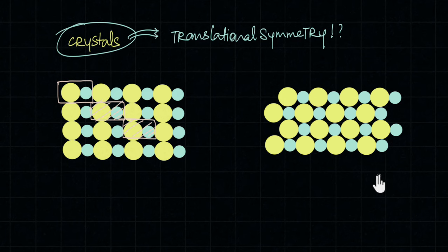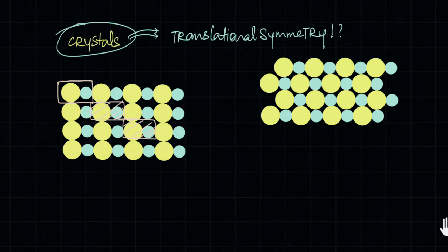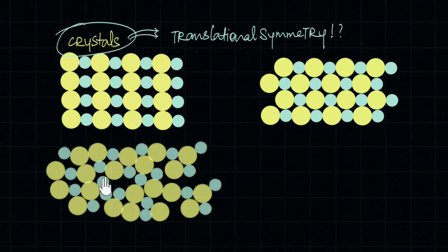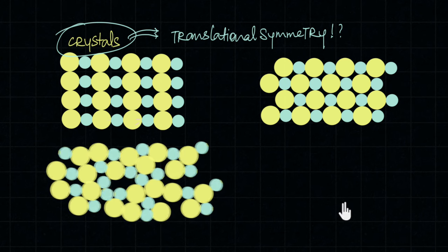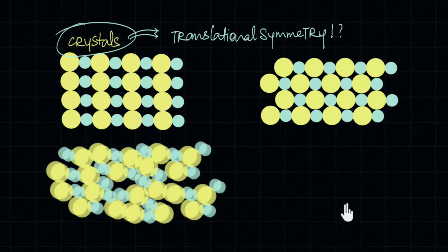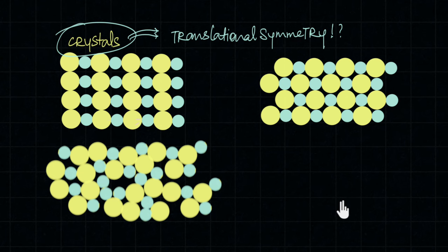Now, would you call this a crystal? Of course not — there is clearly no order in this system. If we move from one unit to another, the atoms are not going to coincide, so there is no translational symmetry. This is not a crystal.